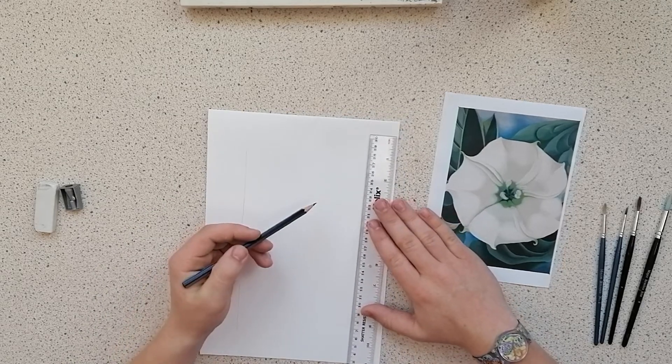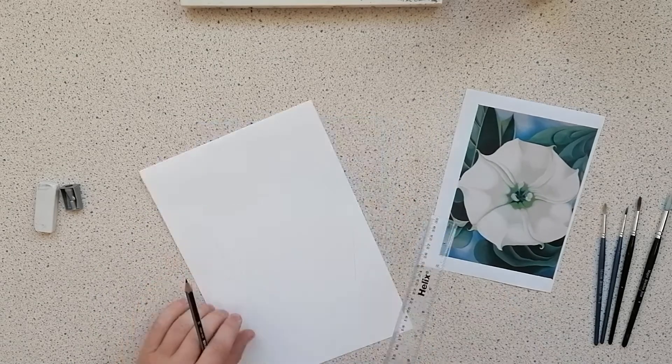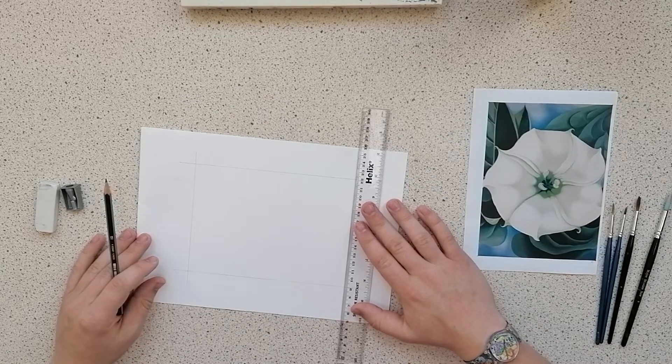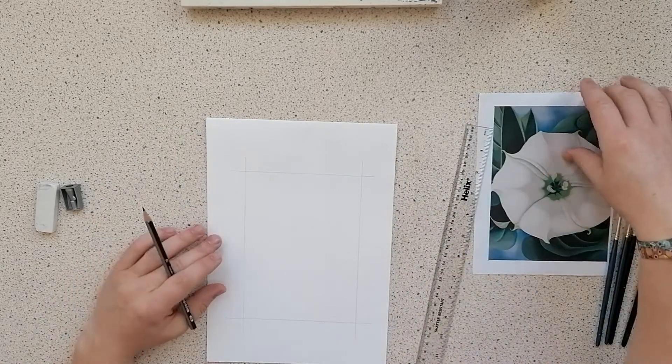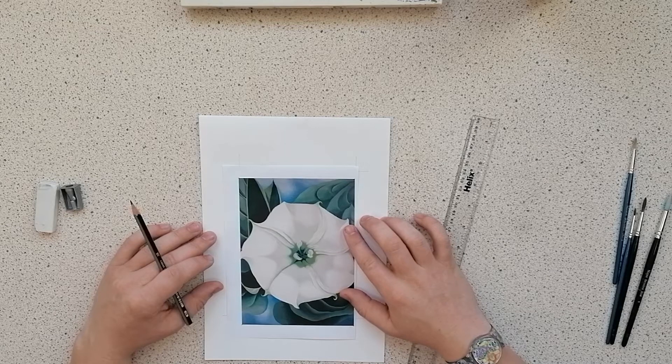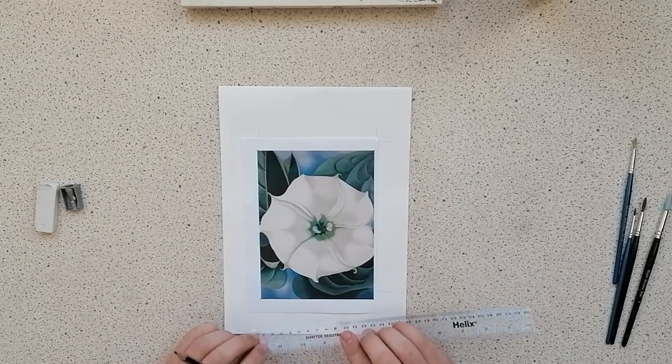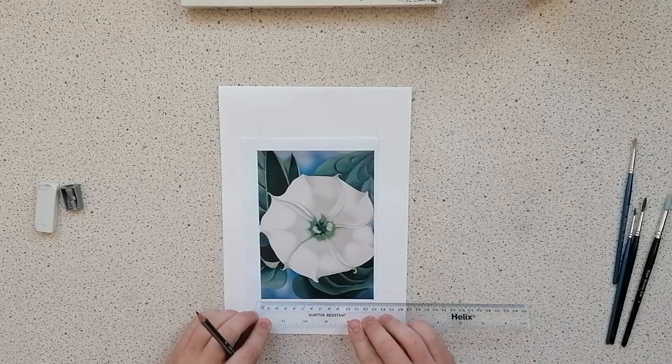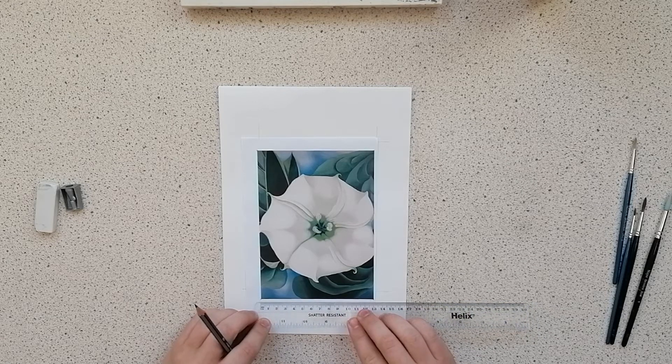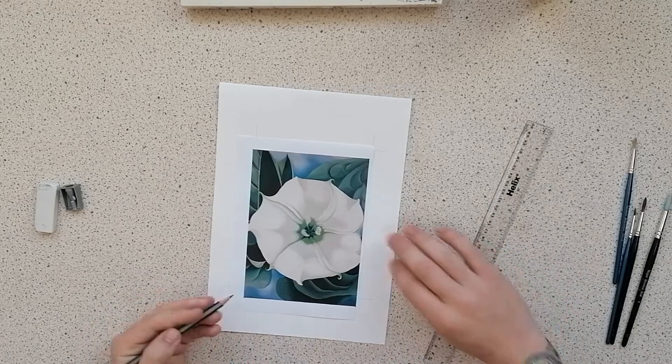Okay, so once you've drawn the box out we need to create a 3 by 3 grid on the photograph itself. So what we need to do is measure the width really quickly, which is 13 centimeters, divide that by 3, which is roughly 4.3.